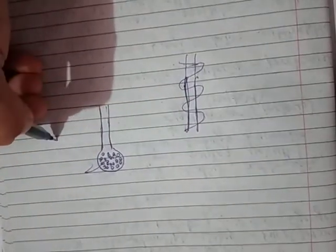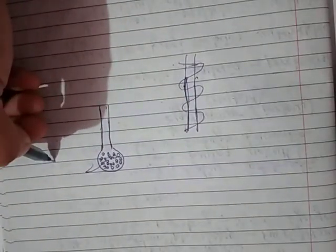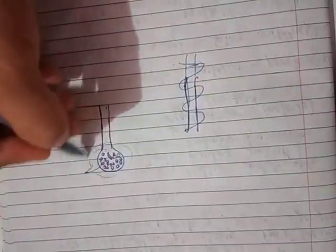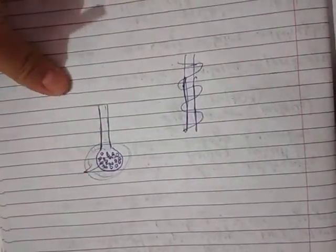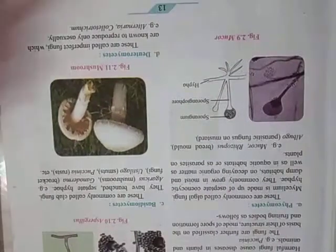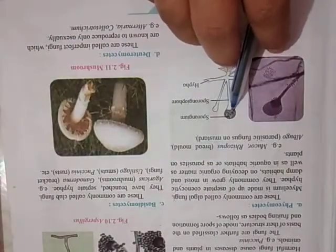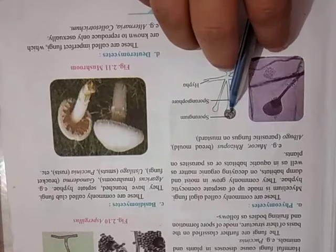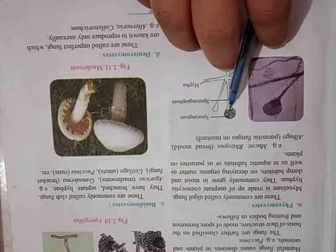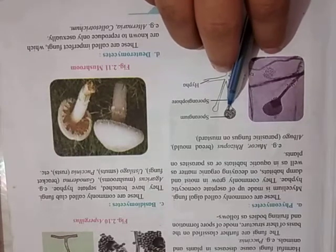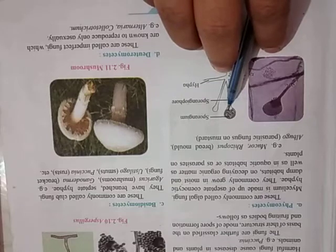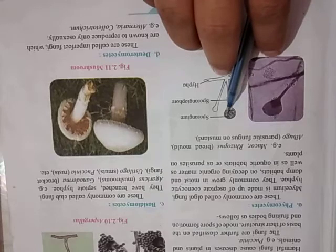After a certain period of time, these spores are released from the sporangium and they are free to reproduce again. This is the spore formation method.